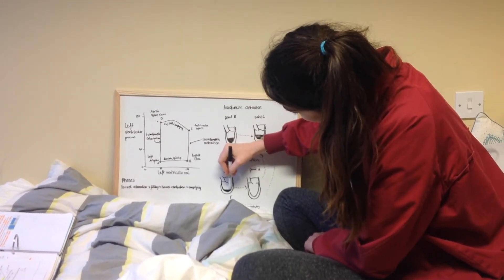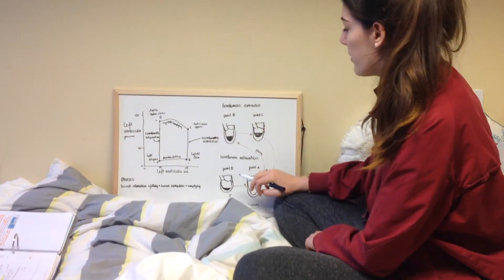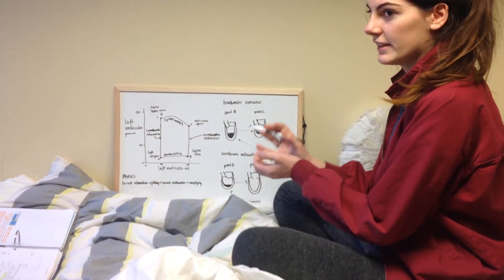This will be the end systolic volume, but the pressure will still be pretty high because the ventricle is still in the contracted state.